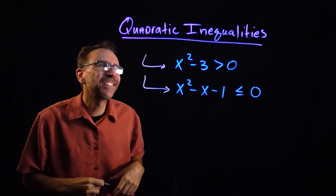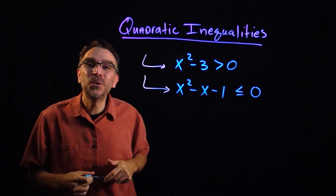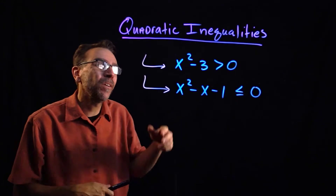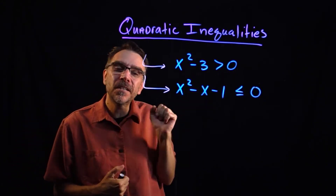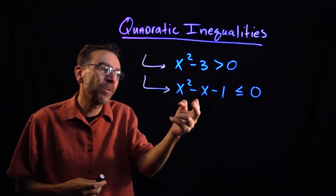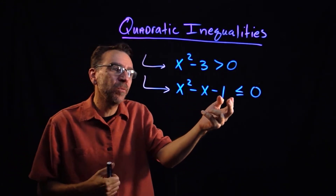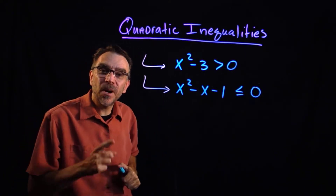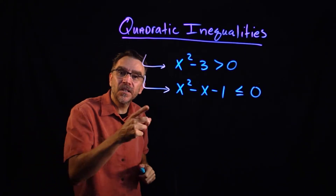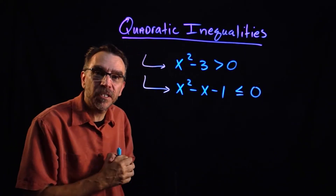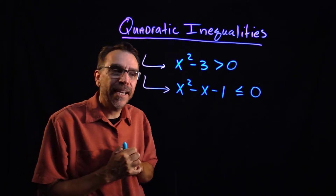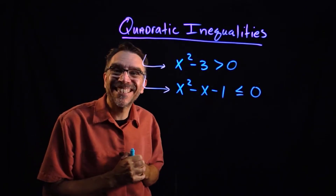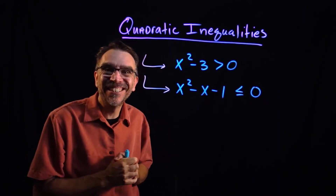In this video, we're going to solve two quadratic inequalities. We have x squared minus 3 is greater than 0, and x squared minus x minus 1 is less than or equal to 0. They're common problems and good test questions. We'll solve them both using a sign chart.